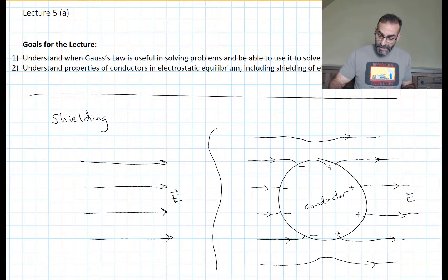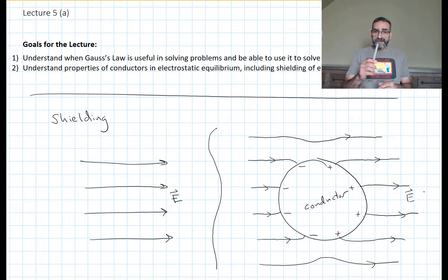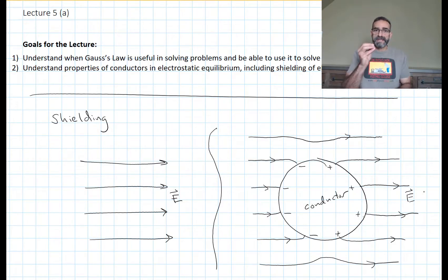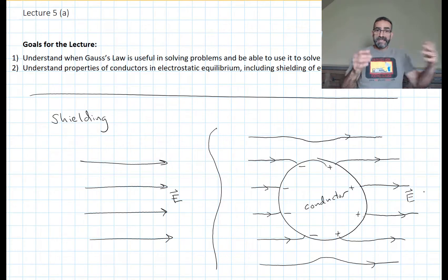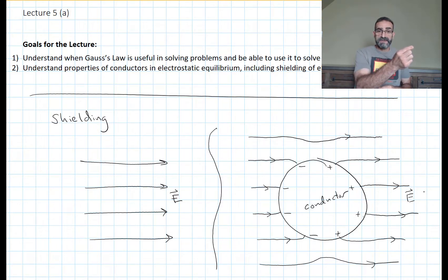The electric field takes on a characteristic shape around the conductor. Now think about what happens inside that conductor. There's an electron inside that conductor that's free to move, and it's happy sitting where it is. When we take that conductive object and put it into some external electric field, that electron feels a force and wants to move opposite the direction of the electric field. So it does.